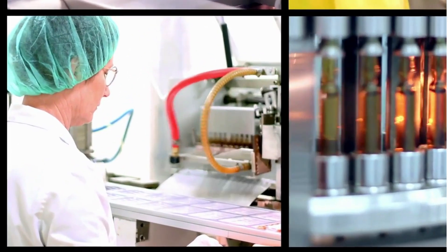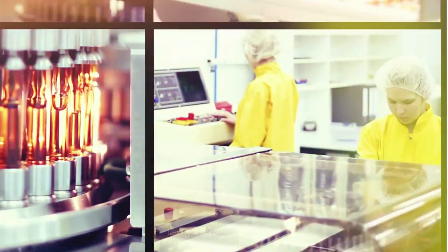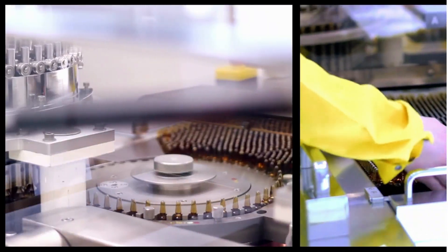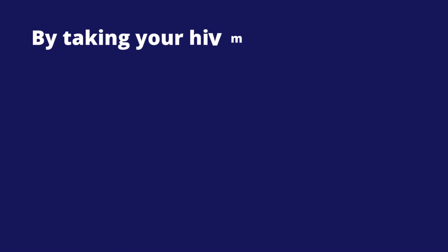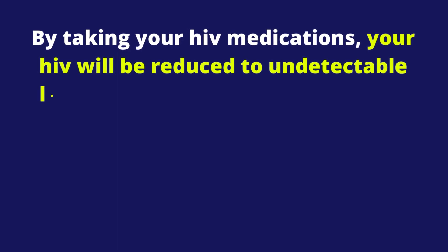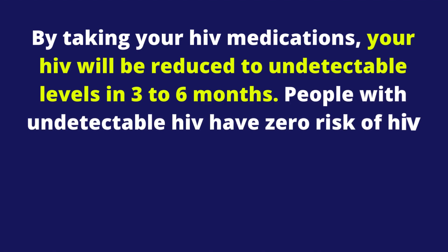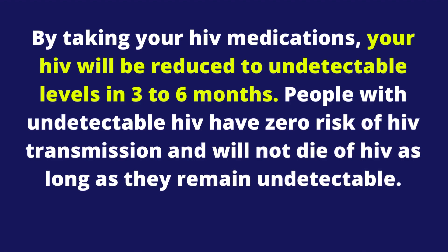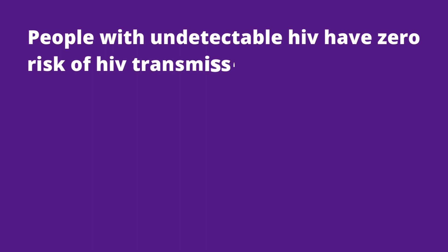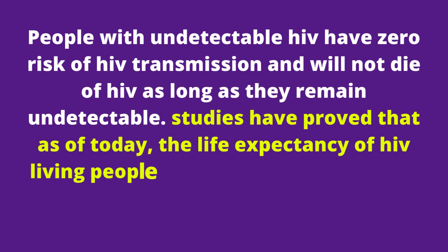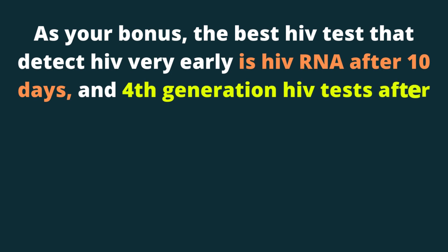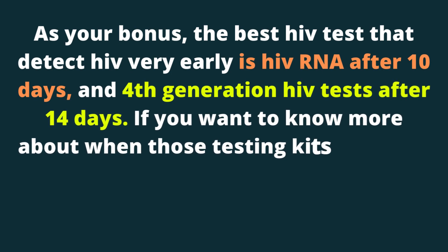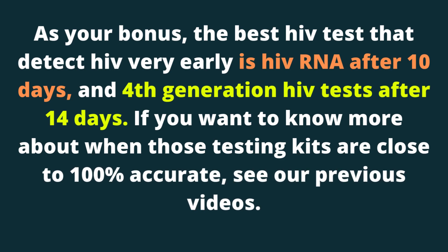There is no HIV cure today, but companies like American Gene Technologies are closer to an HIV functional cure. The only way to treat your HIV is by taking antiretroviral drugs. By taking your HIV medications, your HIV will be reduced to undetectable levels in 3 to 6 months. People with undetectable HIV have zero risk of HIV transmission and will not die of HIV as long as they remain undetectable. Studies have proved that as of today, the life expectancy of people living with HIV is no different from those with no HIV. As a bonus, the best HIV test that detects HIV very early is HIV RNA after 10 days, and 4th generation HIV tests after 14 days. For more on when those testing kits are close to 100% accurate, see our previous videos.